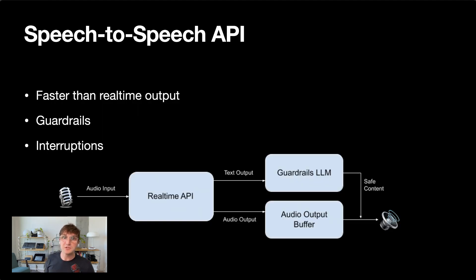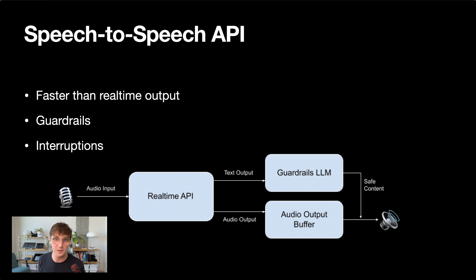There are a couple of interesting things to note about this real-time API. The first is that the output is faster than real-time. What this means is that the response text and audio chunks are generated faster than they can be spoken. If you were to play back the audio as fast as it was generated, it would actually be speaking over itself — speaking multiple words at the same time because it can generate those audio sequences faster than they can be spoken.